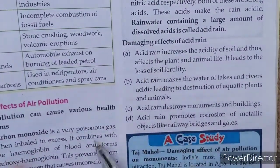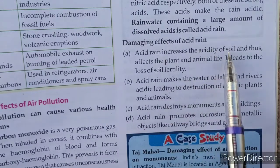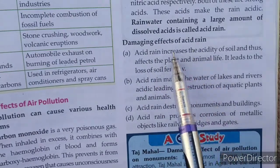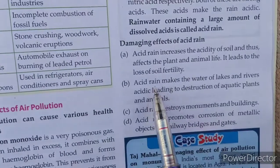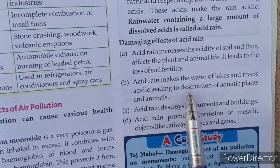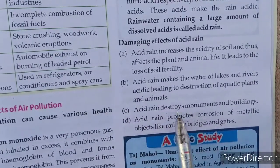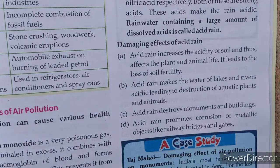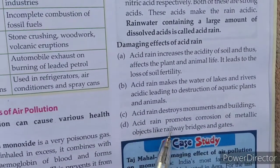The effects of acid rain include: it increases the acidity of soil, which affects plants and animals, and leads to loss of soil fertility. Acid rain makes the water of lakes and rivers acidic, which destroys aquatic plants and animals. It also destroys monuments and buildings, and promotes corrosion of metallic objects like railway bridges and gates.